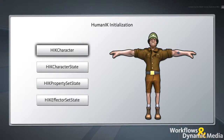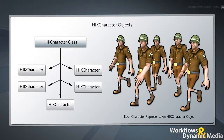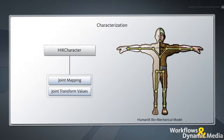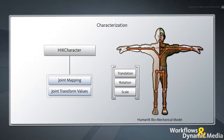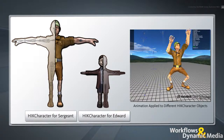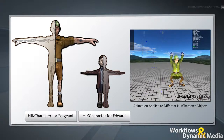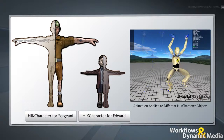First, you must create an HIKCharacter object. Each instance of the HIKCharacter class represents a HumanIK-enabled character in the code. The class contains everything HumanIK needs to understand your character's skeleton structure and geometry so that it can be controlled at runtime. You create the HIKCharacter through a process called Characterization, which defines a mapping between each joint in your character's skeleton and its corresponding node in the HumanIK biomechanical model, as well as the translation, rotation, and scale values for each joint that defines your character's default pose, also referred to as a T-stance. This means that whether your character has a standard humanoid skeleton structure or exaggerated proportions, the HIKCharacter stores this data and passes it to the HumanIK solvers.